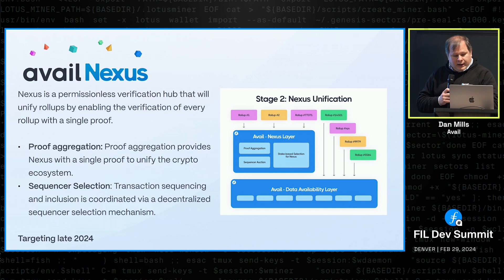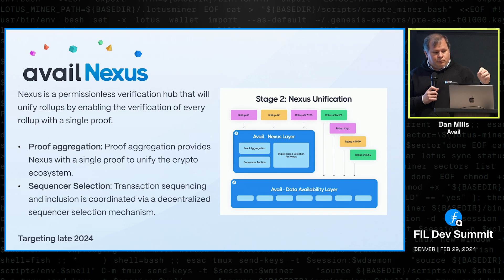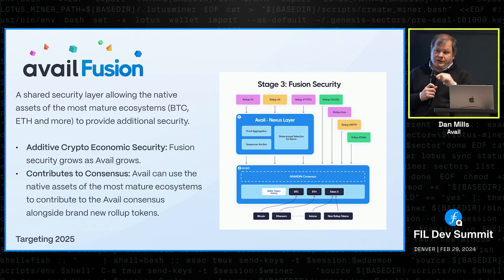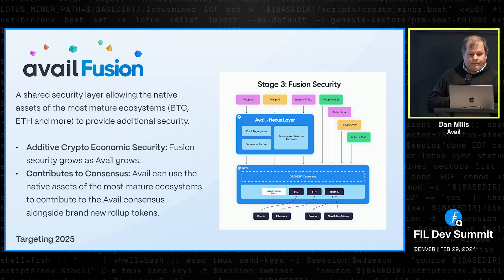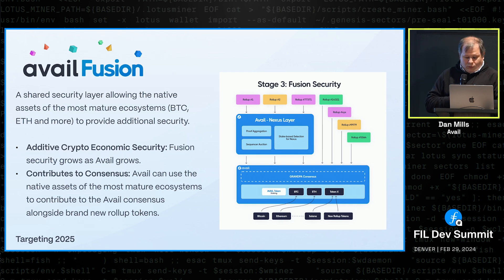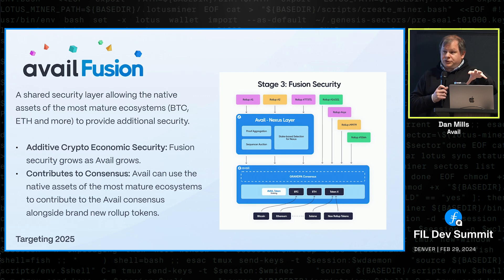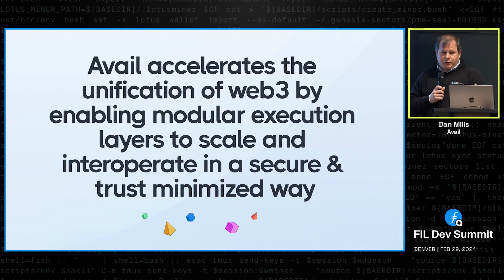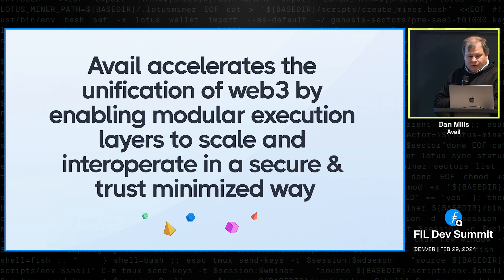In order to power all of this, our DA layer needs to be very secure. For that, we're launching Avail Fusion, which is a way to bring high-value tokens like BTC and ETH to Avail and actually use them as part of the Avail consensus protocol. That's a fairly new thing that hasn't really been done before, and we're very excited about it. It's targeted for next year. In a nutshell, we're trying to accelerate the unification of Web3 by enabling modular execution layers — rollups on top of Avail — to scale and interoperate in a secure, trust-minimized way.